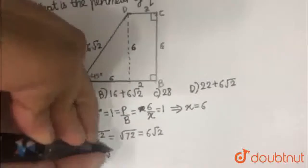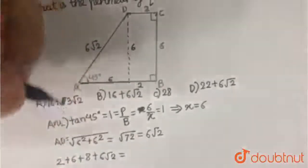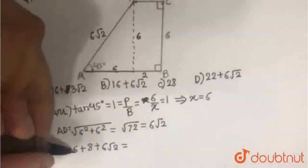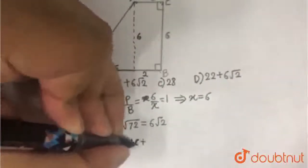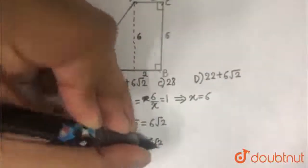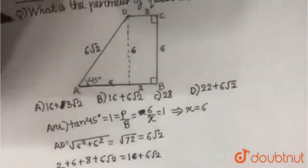This comes out to be 2 plus 6 is 8, plus 8 is 16. So it is 16 plus 6 root 2, and 16 plus 6 root 2 is option B.